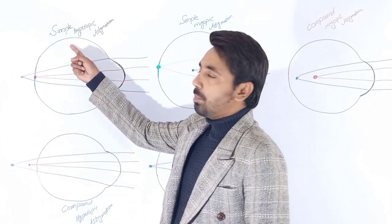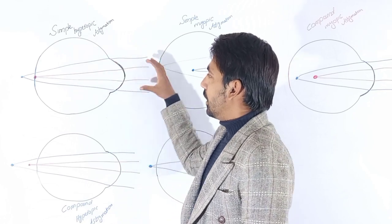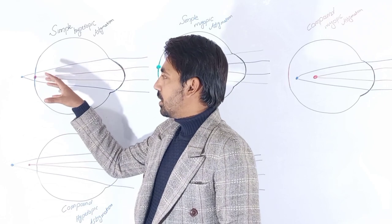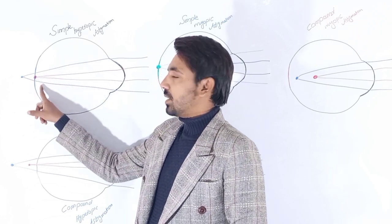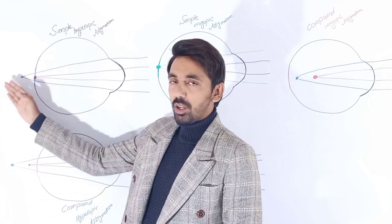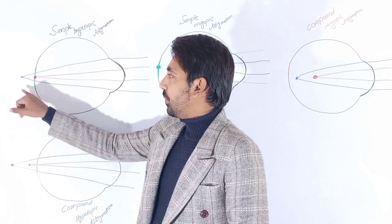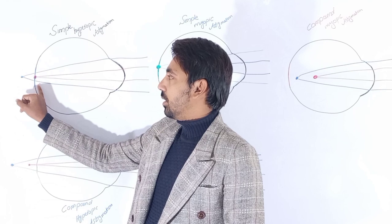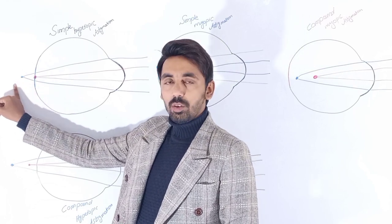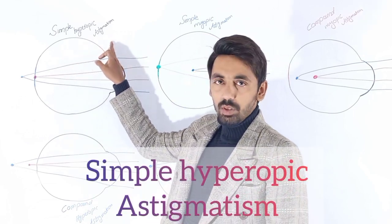The very first is called simple hyperopic astigmatism. As you can see, when different light rays penetrate the eye, some of the light rays are focused on the sensitive layer of the retina and some are focused back of the retina, or behind the retina. So there are two different focal points: the first one is on the retina and the second one is behind the retina.